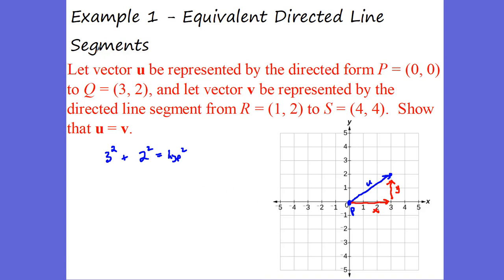So, 3 squared plus 2 squared — I'm going to square root that — ends up being the square root of 13. So Vector U ends up having a magnitude, and we're going to have a little symbol for magnitude, a double line on each side, equal to the square root of 13. The magnitude of that vector is the square root of 13.